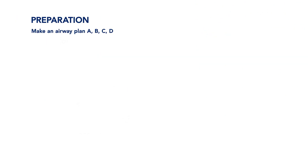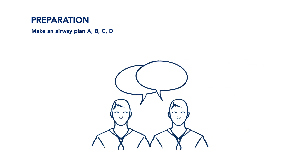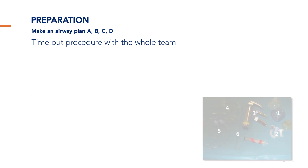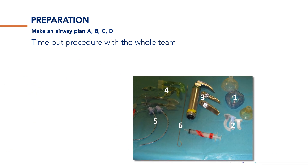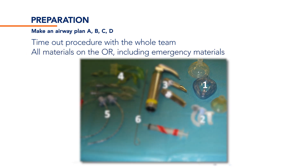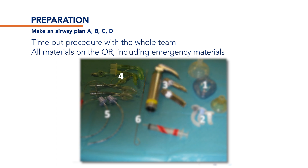An essential part of dealing with a difficult airway is preparation and thorough communication in a time-out procedure where different scenarios and airway plans are discussed with the whole team involved. Make sure you have all necessary materials ready for the various scenarios. This includes different size ventilation masks, oropharyngeal tubes, laryngoscopes with different blades, laryngeal masks, endotracheal tubes in different sizes, and stylets.